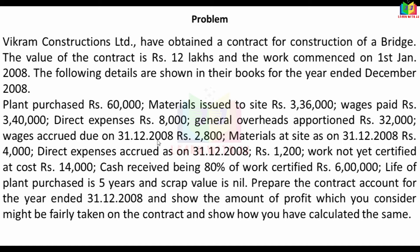Wages accrued due on 31-12-2008: Rs. 2,800. Materials at site as on 31-12-2008: Rs. 4,000. Direct expenses accrued as on 31-12-2008: Rs. 1,200. Work not yet certified at cost: Rs. 14,000. Cash received being 80% of work certified: Rs. 6,00,000. Life of plant purchased is 5 years and scrap value is nil. Prepare the contract account for the year ended 31-12-2008 and show the amount of profit which might fairly be taken on the contract, and show how you have calculated the same.